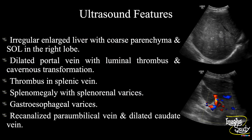In summary, the liver is enlarged in size, irregular in shape, with coarse parenchyma and multiple heterogeneous space-occupying lesions within the right hepatic lobe. The main portal vein is dilated with luminal thrombi and cavernous transformation. Thrombi were also seen within the distal splenic vein. The spleen is enlarged with tortuous splenorenal varices, and tortuous vessels around the gastroesophageal junction indicate gastroesophageal varices. We also identified a recanalized para-umbilical vein and dilated caudate vein. Final impression: hepatocellular carcinoma with hepatic metastasis on the background of chronic liver disease with portal venous thrombosis, cavernous transformation, and development of portosystemic collaterals.